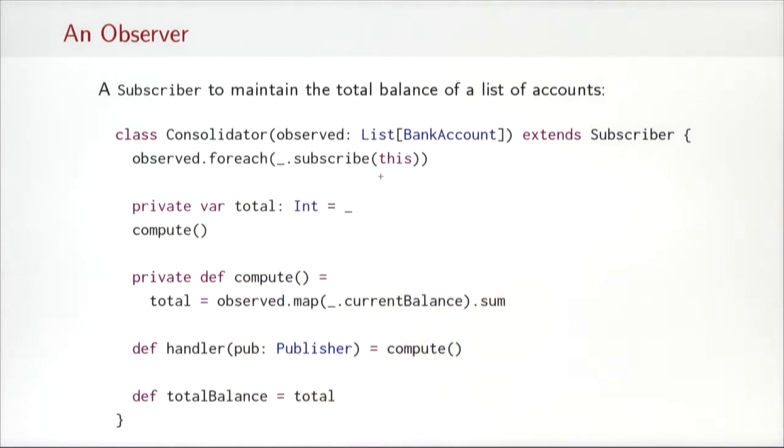What it needs to do then is maintain a variable, which is the total sum of the balances of all the bank accounts. I have written here private var total Int equals underscore. That means that the variable is initially uninitialized. That's what the underscore does here. I initialize it by calling the compute method. So what does compute do? The compute method goes through all observed bank accounts, takes the current balance of each and takes the sum of these balances and stores the result in total. Compute is also called by the handler method of the subscriber. So whenever one of the bank accounts changes, compute is invoked again to recompute the total balance.